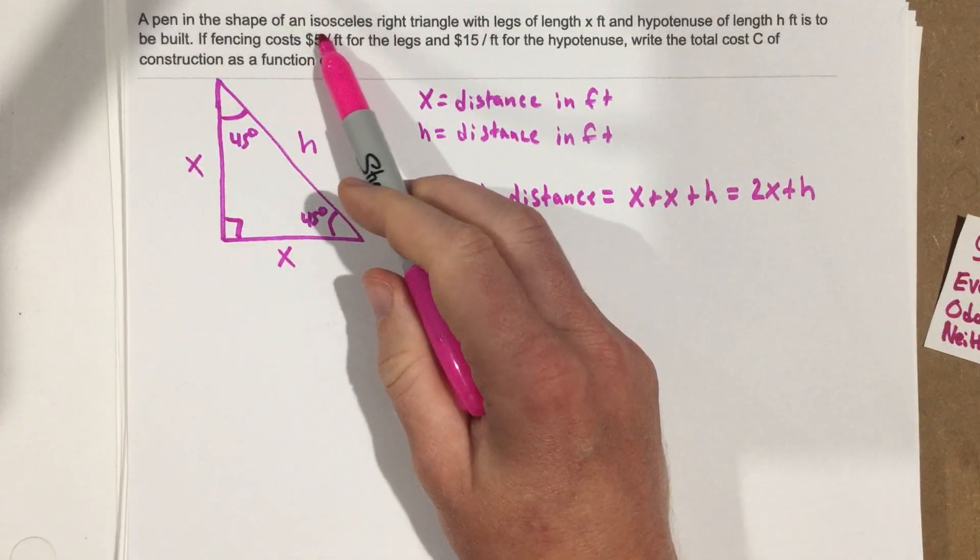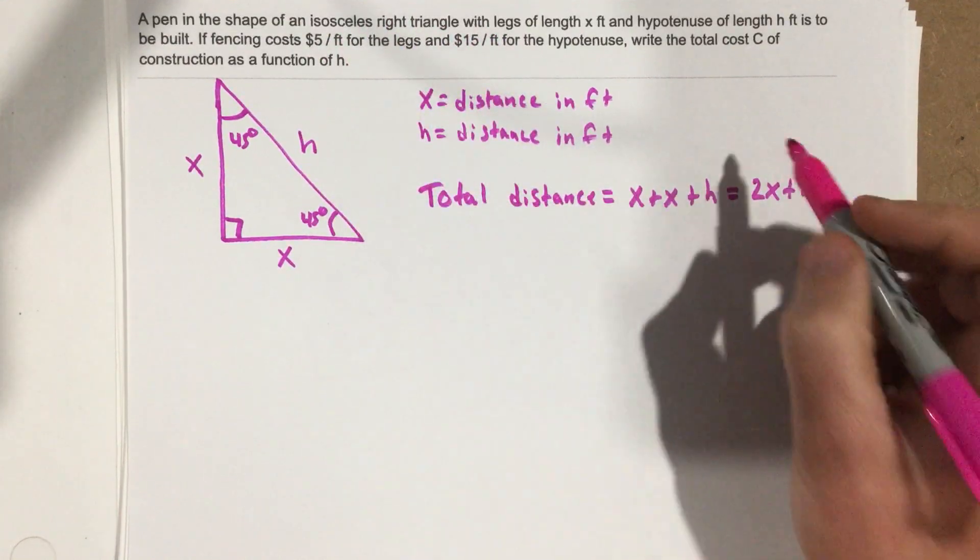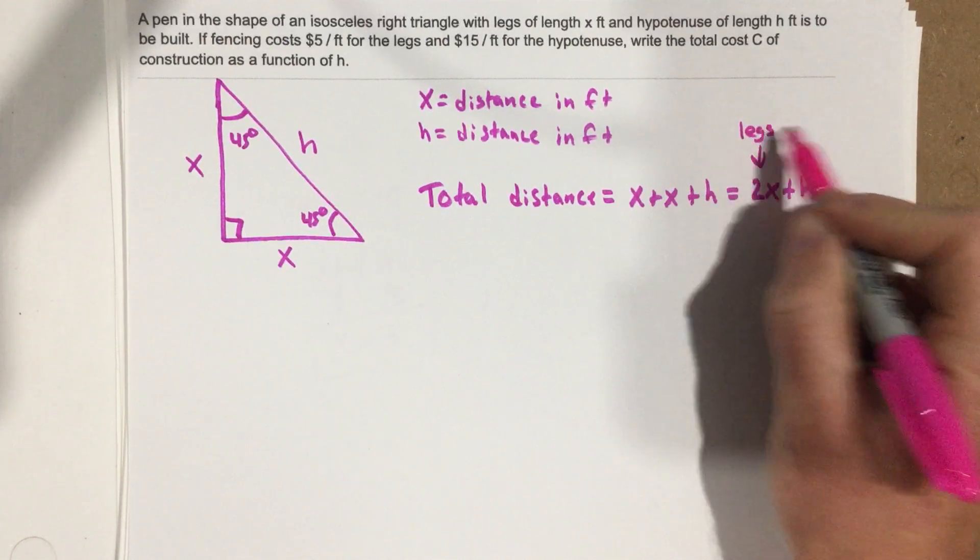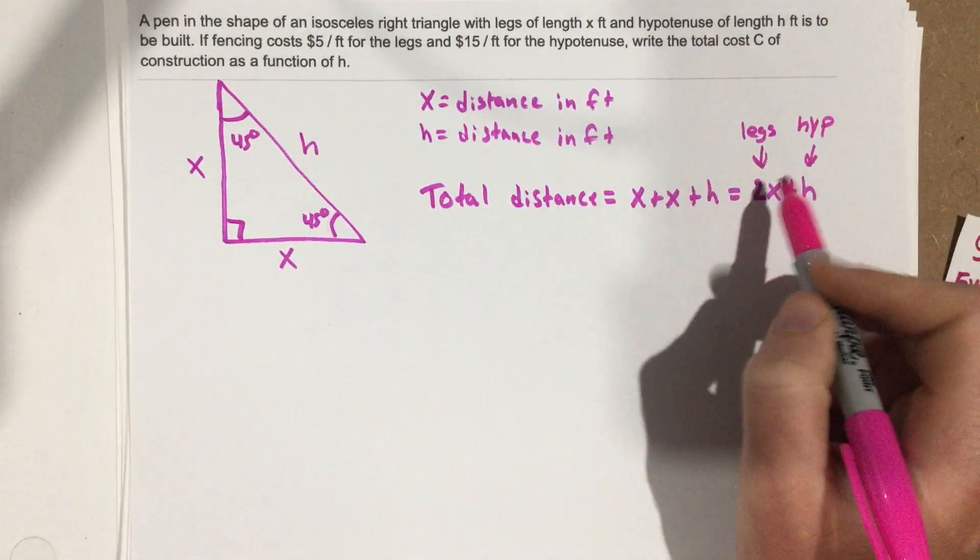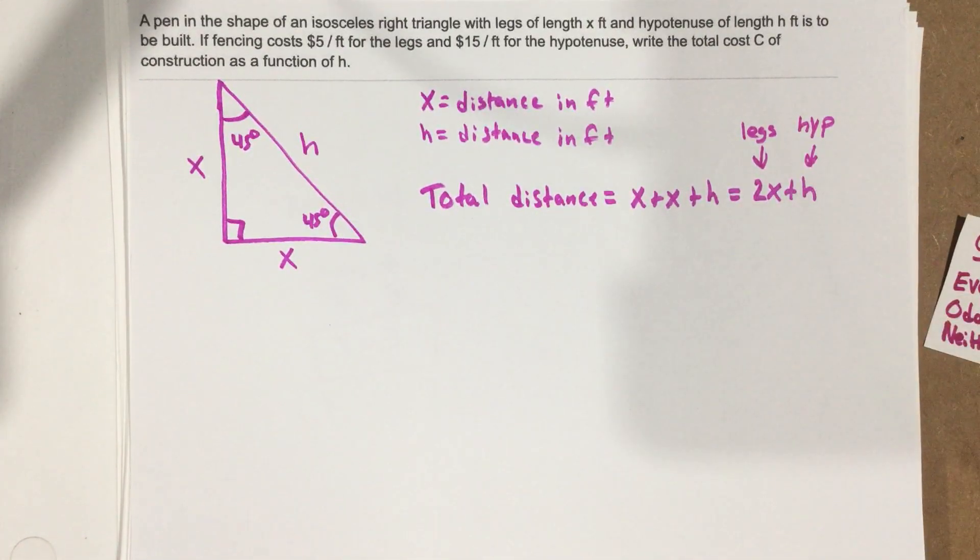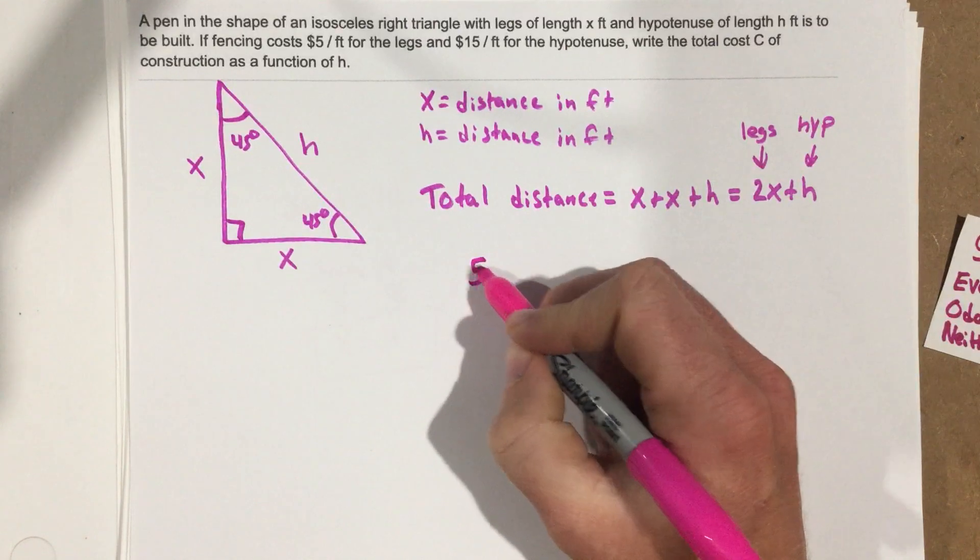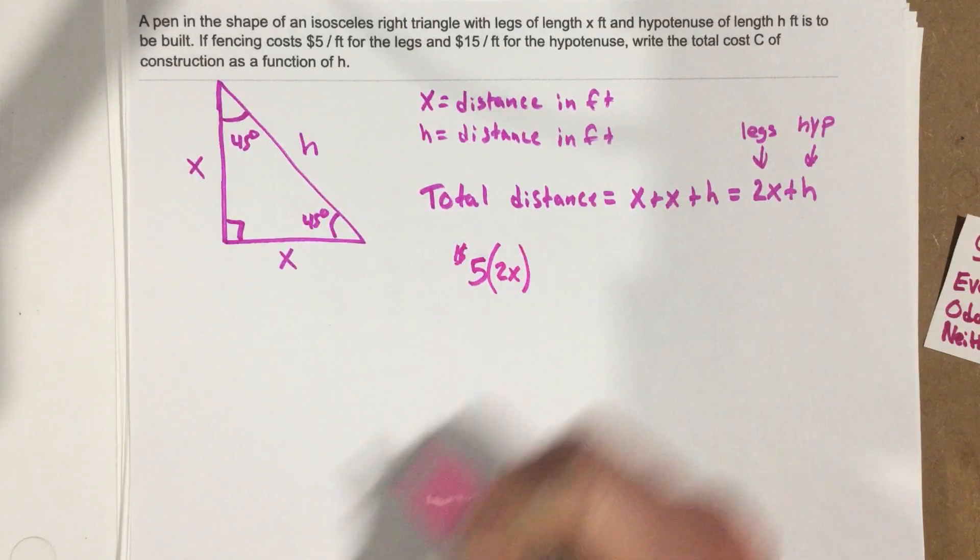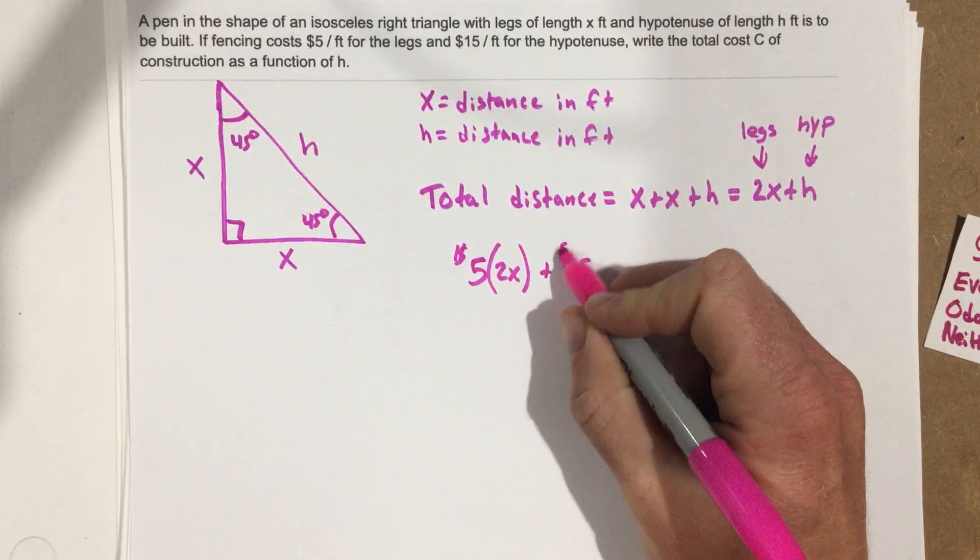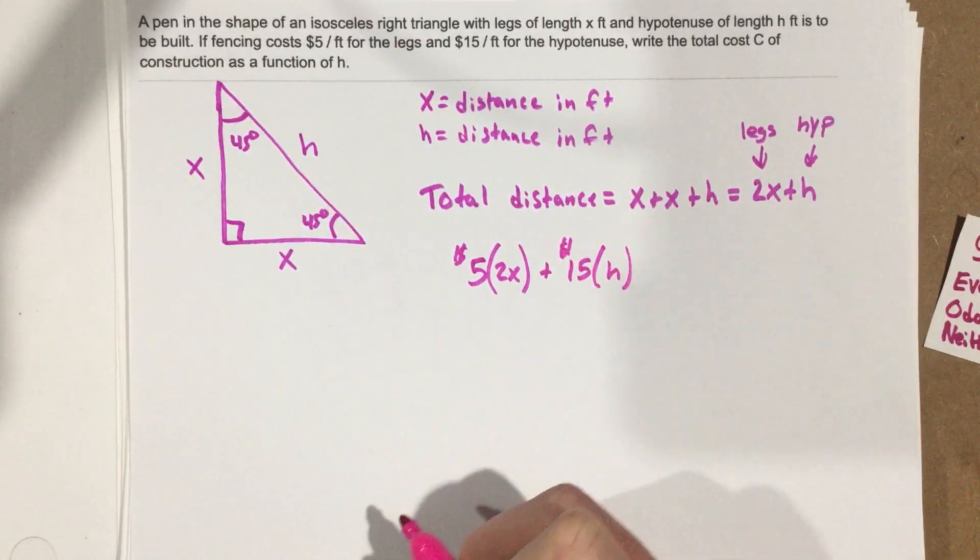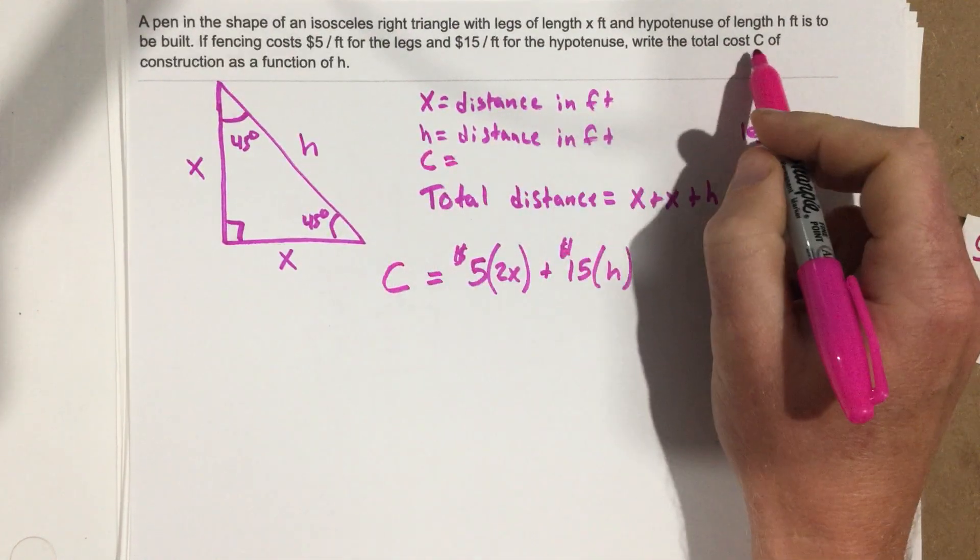Now, our fencing costs $5 a foot for the legs and $15 a foot for the hypotenuse. Well, these are the legs and this is the hypotenuse. So because 2X is the legs and the hypotenuse is here, we're going to say $5 times 2X plus $15 times H. That's going to equal C, and C, remember, they said in the problem is the total cost.